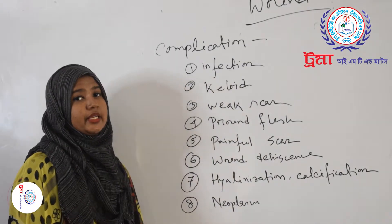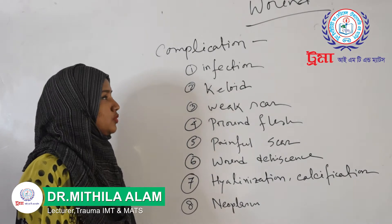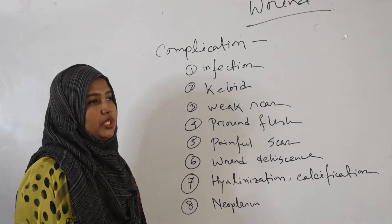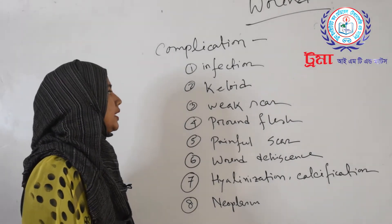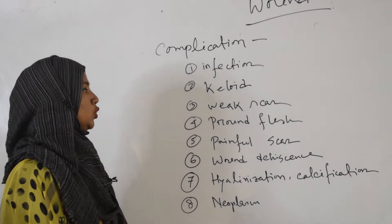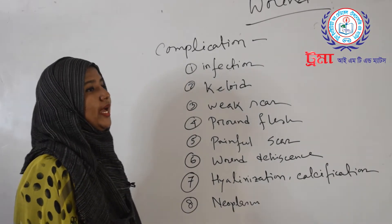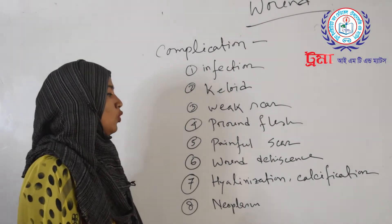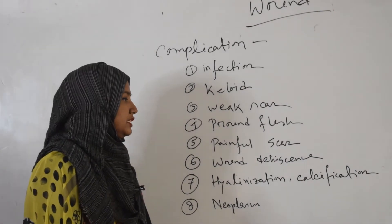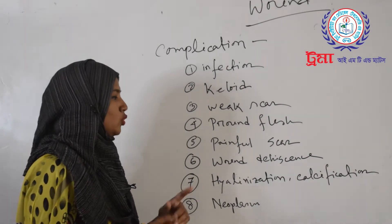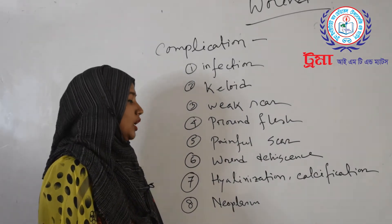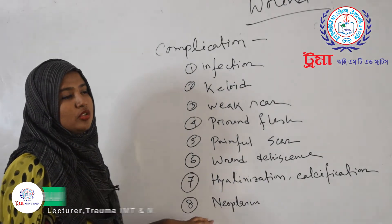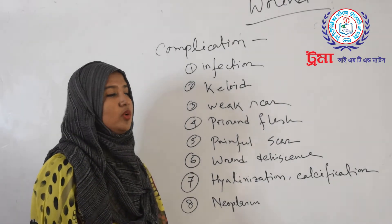Complications of wound healing include: infection, keloid, calcification, and tumor — each representing a different type of complication of wound healing.